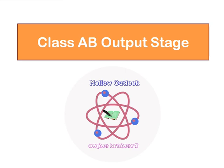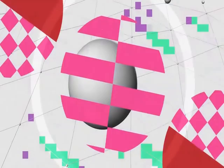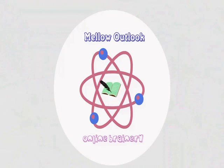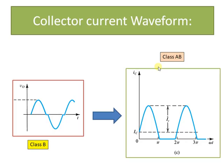Welcome to the tutorial on class AB output stage. In the class B, what we had observed was that the Q point was at VC is equal to VCC.